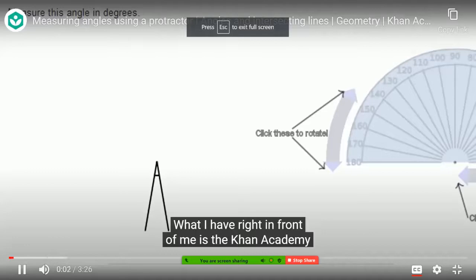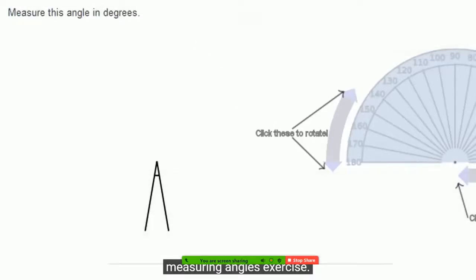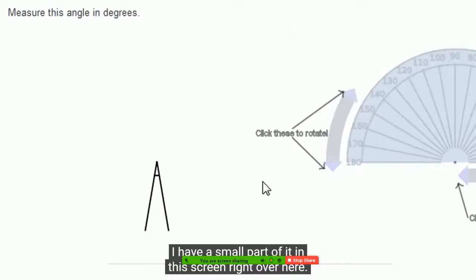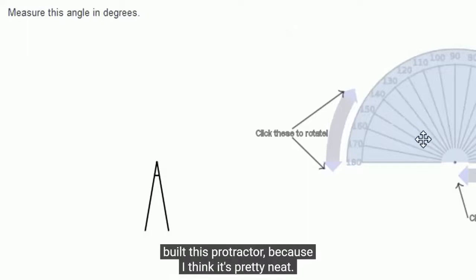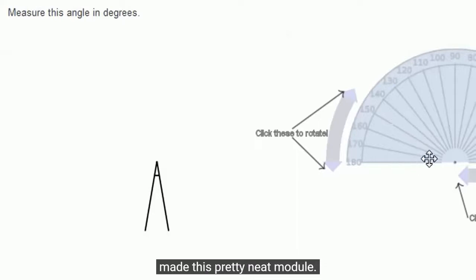What I have right in front of me is the Khan Academy measuring angles exercise. I have a small part of it in this screen right over here, and it's a pretty cool exercise because it has this little virtual protractor that we can use to actually measure angles. I want to give credit to the person who built this protractor because I think it's pretty neat. Omar Rizwan, who was actually a high school intern, made this pretty neat module.